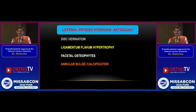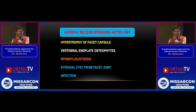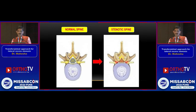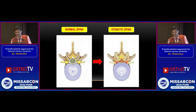The etiology: commonly it is disc herniation, ligamentum flavum hypertrophy, facet osteophytes, annular bulge or calcification, hypertrophy of the facet capsule, vertebral end plate osteophytes, cyst disease, synovial cyst, and rarely it can be infection. This is how the normal spine with ageing becomes a stenotic spine. You can see all the changes which happen with ageing: facetal arthritis, ligamentum flavum buckling, and annular bulge which cause the stenosis.